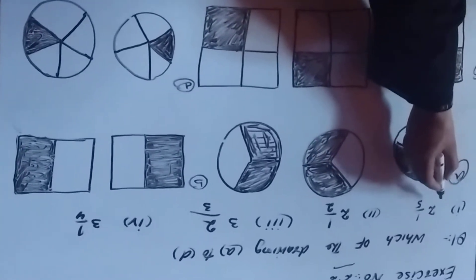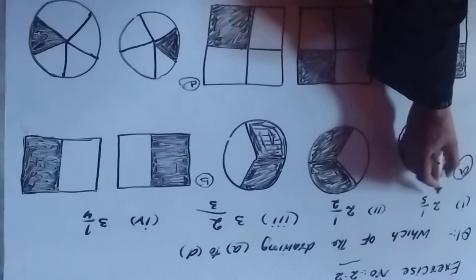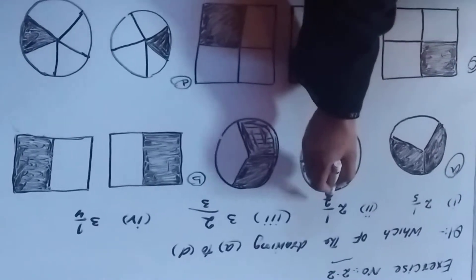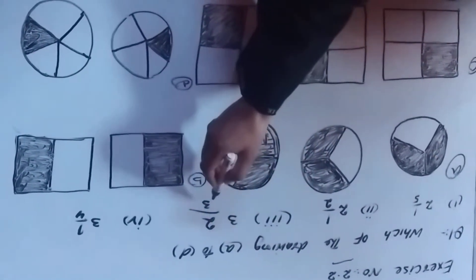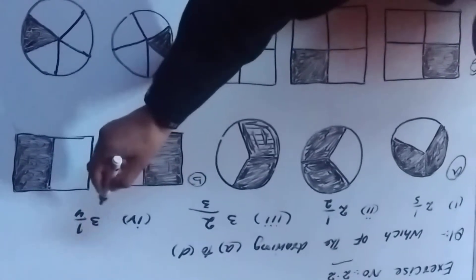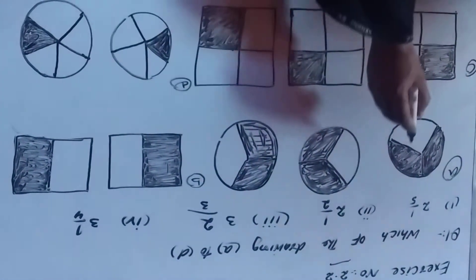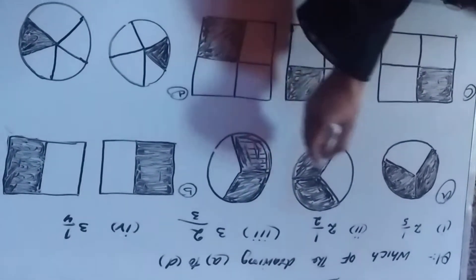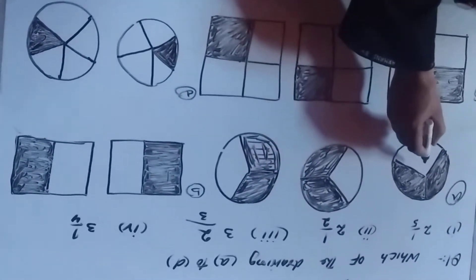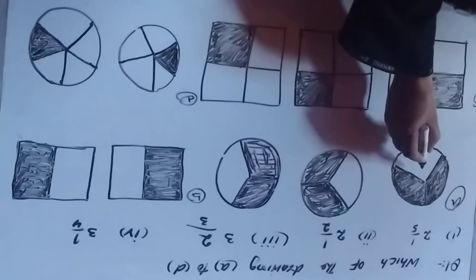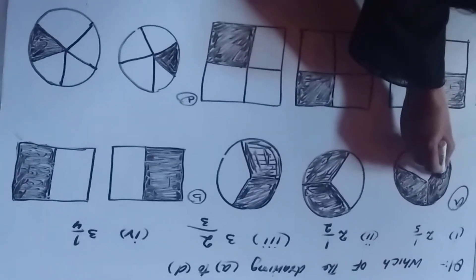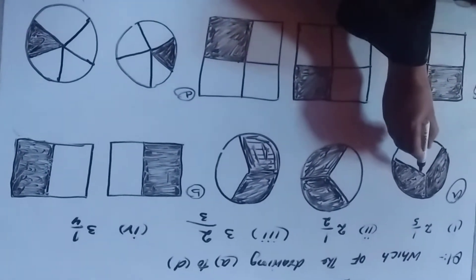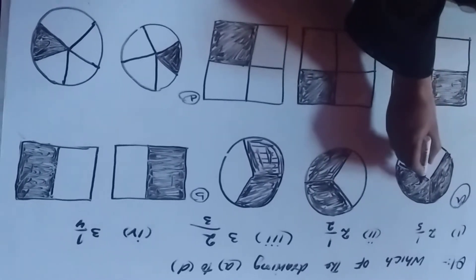Now, part number 1 is 2 and 1 by 5. Part 2 is 1. Part 3 is 2, 3. And part 4 of this exercise is 3, 1, 2, 3, and 4 parts. So we are going to do this exercise.